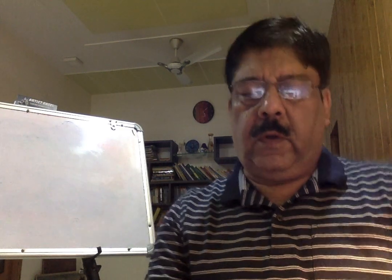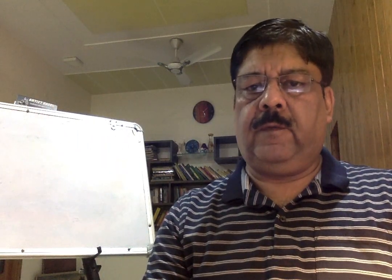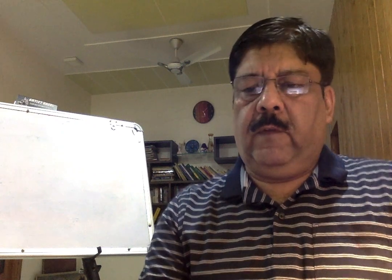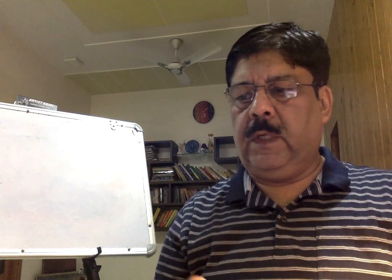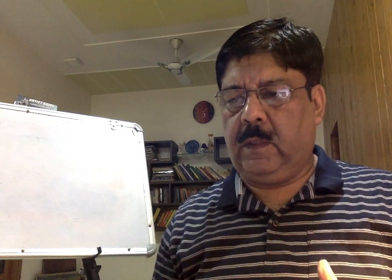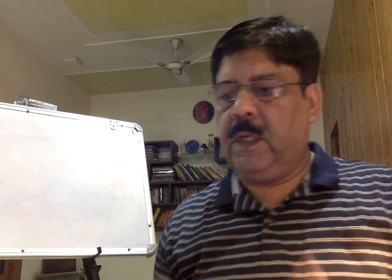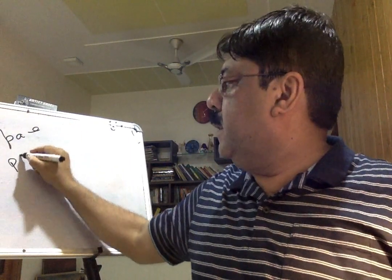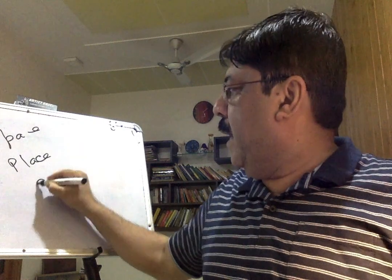Welcome to the social geography class. Today we will discuss space, which is an important part of human geography. Human geography is the geography where space matters. We will talk about three main attributes: space, place, and scale.